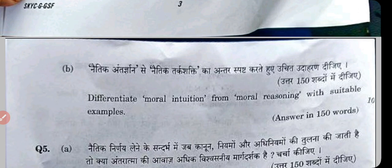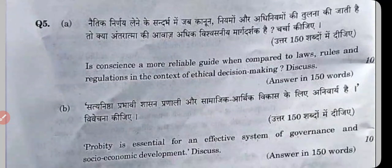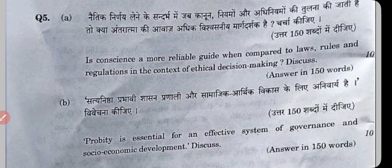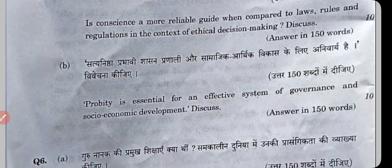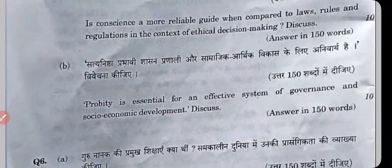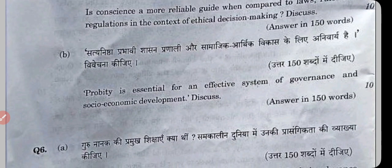In question 4B: differentiate moral intuition from moral reasoning with suitable examples. Conscience is more reliable compared to law, rules, and regulations, because the inner voice is more powerful than the code of justice, the Supreme Court, or High Court. It is the code of God. Our higher moral intuition helps us decide what is wrong and right — it is a God-gifted thing.